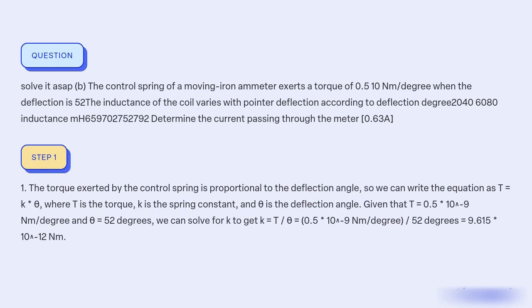1. The torque exerted by the control spring is proportional to the deflection angle, so we can write the equation as T = k × θ, where T is the torque, k is the spring constant, and θ is the deflection angle.